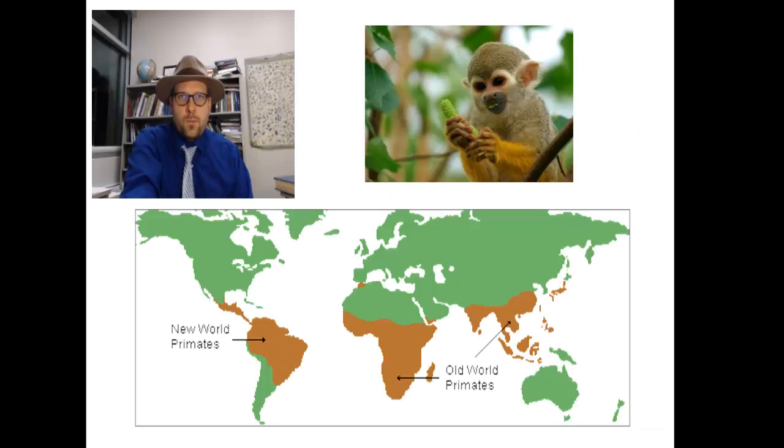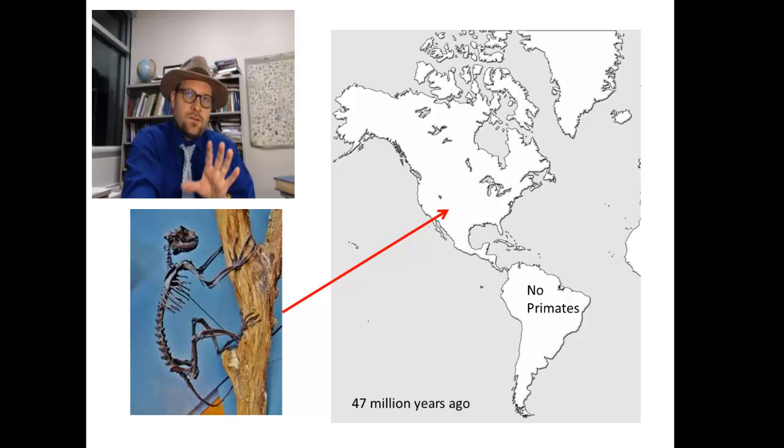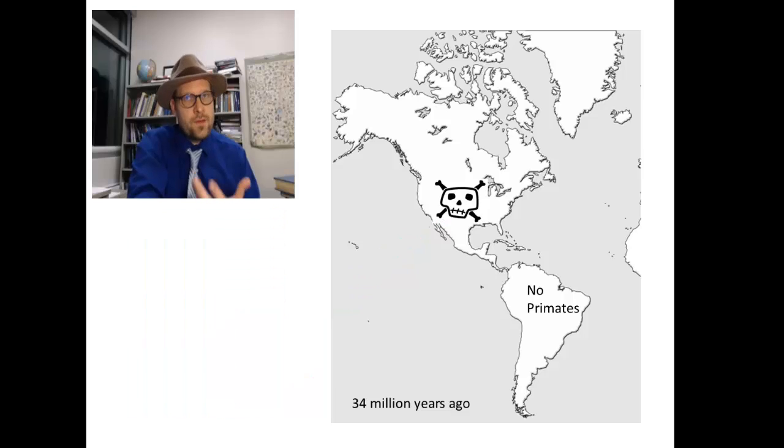Primates are distributed across the globe, and if you exclude humans, most primates today live in tropical climates. In the Americas, primates live in Central and South America, although there is a rich fossil record of primates from North America. But as the climate cooled during the later half of the Cenozoic, primates vanished from North America near the end of the Eocene, around 34 million years ago, with a few questionable groups lingering until the Oligocene around 30 million years ago.